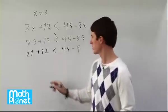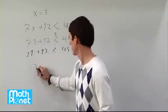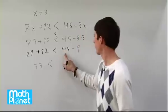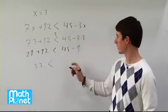So now we can simplify this. 21 plus 12 is 33 less than 45 minus 9 is 36.